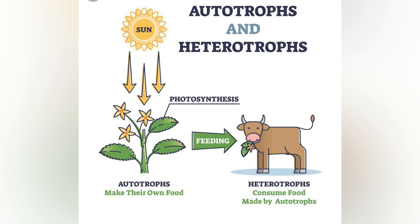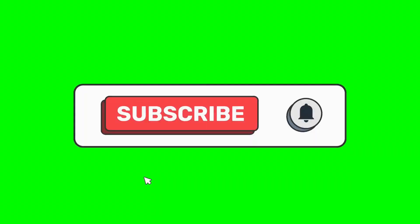Tritvores are heterotrophs which obtain nutrients by consuming detritus. Saprotrophs are chemo-heterotrophs that use extracellular digestion and processing of decayed organic matter. The process is most often facilitated through the active transport of such materials through endocytosis within the internal mycelium and its constituent hyphae.